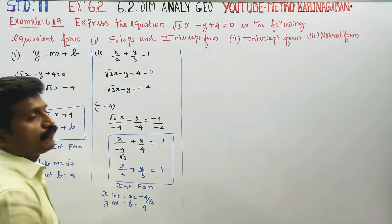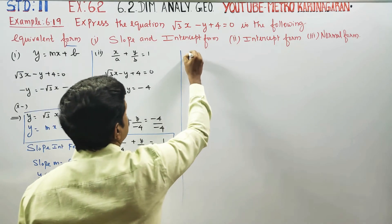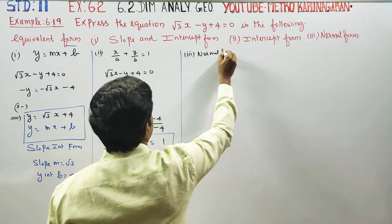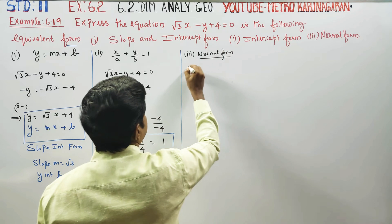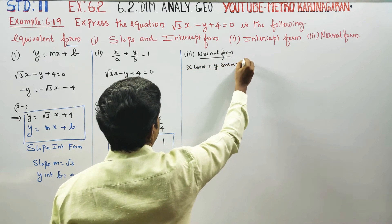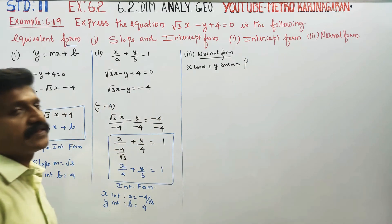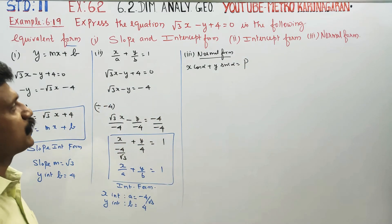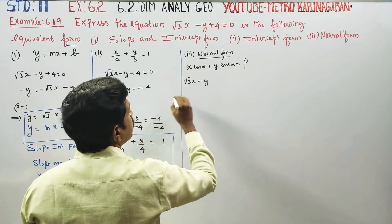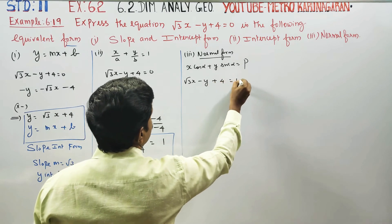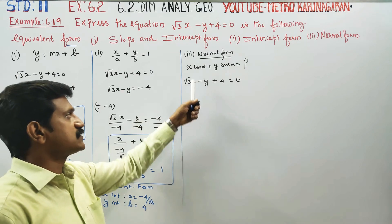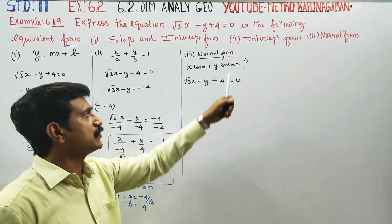Finally, normal form — the third step is normal form. The normal form is x cos alpha plus y sin alpha is equal to p. The equation is root 3x minus y plus 4 is equal to 0. We need to match it to the form x cos alpha plus y sin alpha is equal to p.